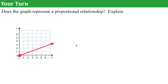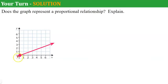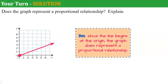Try this one — does the graph represent a proportional relationship? Make sure you can explain. Go ahead and pause. Welcome back. We look at the origin and the line passes through it — or starts there, since it's a first-quadrant graph. So yes, since the line begins at the origin, the graph does represent a proportional relationship.